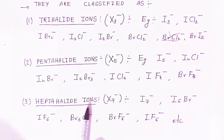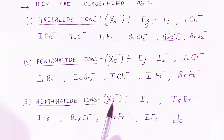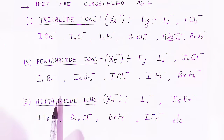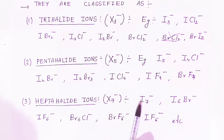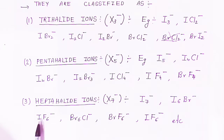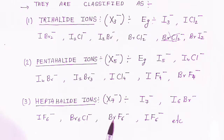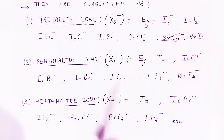The third type is heptahalide ions, meaning seven halogen atoms — also an odd number — represented as X7-. Examples include I7-, I6Br-, IF6-, Br6Cl-, and BrF6-. In these structures, iodine is at the center surrounded by fluorine atoms.